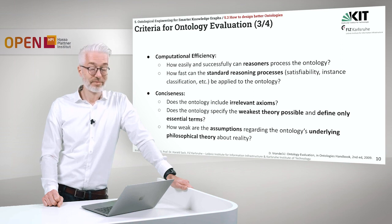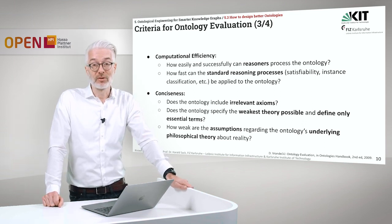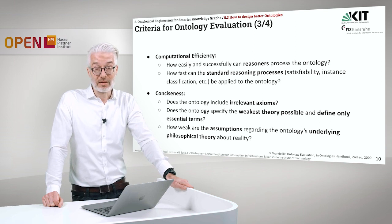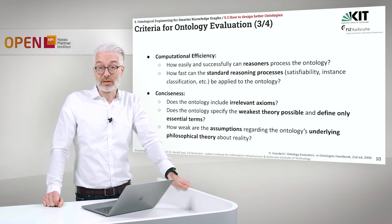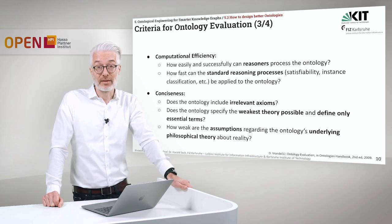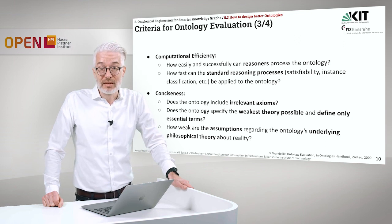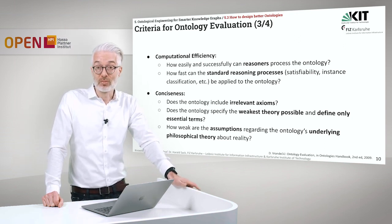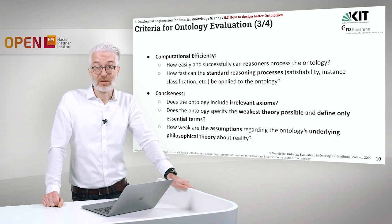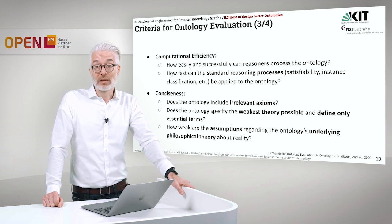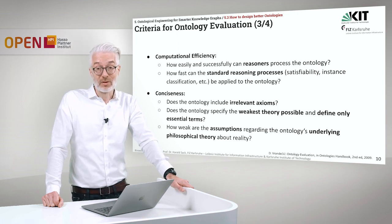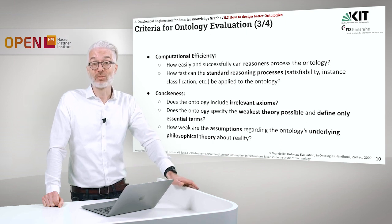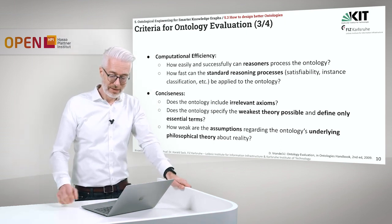Conciseness is also related to this. Does the ontology include irrelevant axioms — axioms you don't need? You can also find out about that with your competency questions: if an axiom is never covered by any competency question, you have to ask whether it was really necessary. Does the ontology specify the weakest theory possible and define only the essential terms? How weak are the assumptions regarding the ontology's underlying philosophical theory about reality? These are difficult questions requiring expertise in both ontology design and philosophical theory.